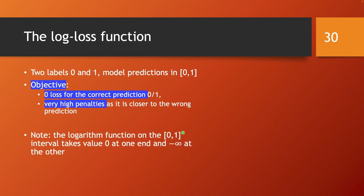The question is what kind of function gives that behavior. One simple choice is the logarithm function, because when applied on the interval [0, 1], it is exactly what we need. At one end of the interval it takes value 0, and at the other end it takes value minus infinity. If we flip it — looking at the minus logarithm — then one end of the interval gives value 0 and the other end gives value plus infinity. So we will work with this logarithm function and turn it into the loss function we want.